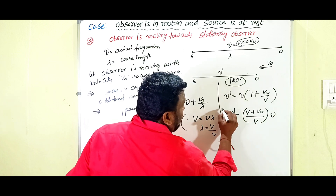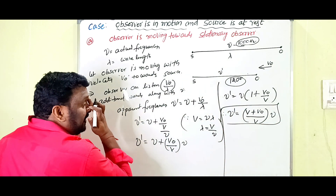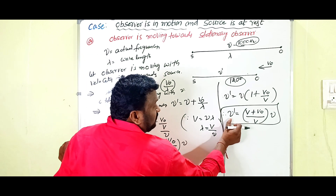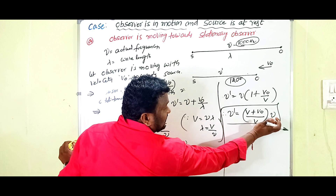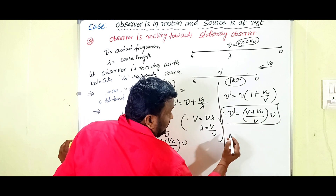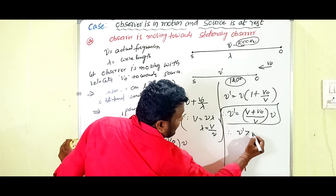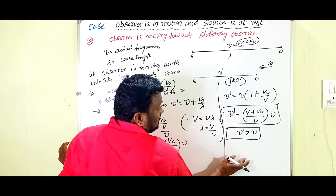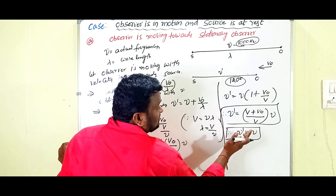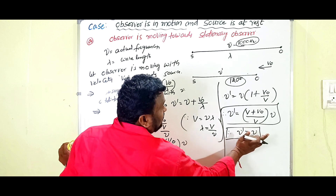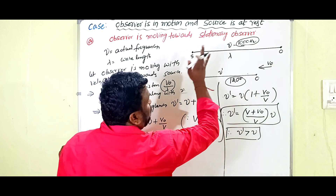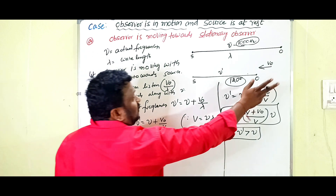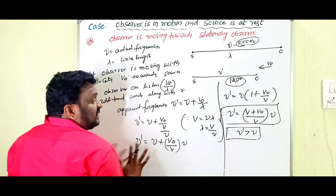This is the expression for apparent frequency. ν' is the apparent frequency and ν is the actual frequency. Since the numerator has (v + v₀), the apparent frequency ν' is greater than the actual frequency ν. This is the expression for apparent frequency when the observer is moving towards the stationary source.